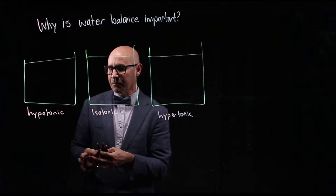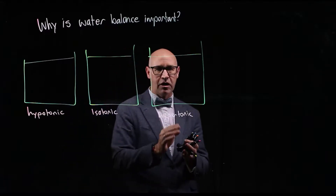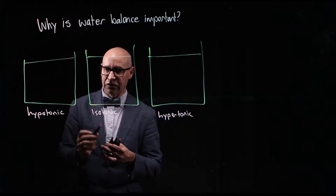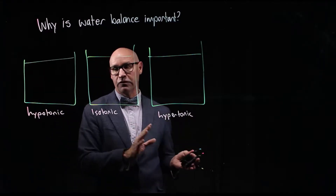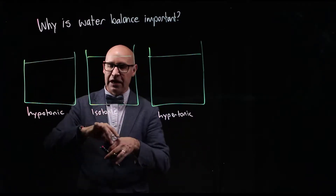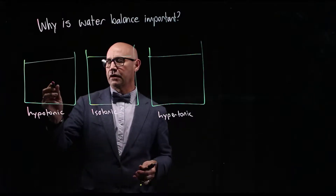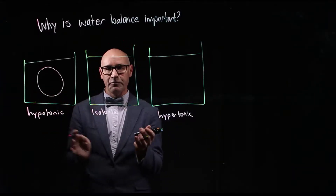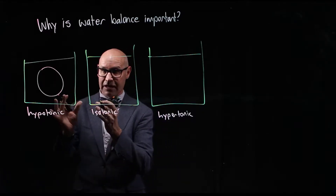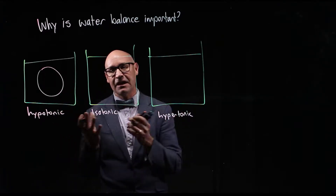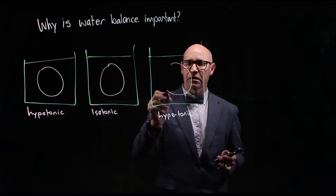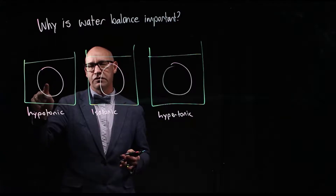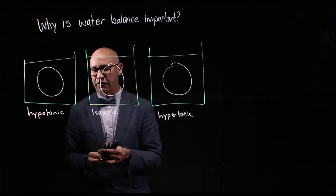Now when we're talking about hypo, iso and hyper, we're talking about the amount of solute — the thing dissolved in the water — in the solution around the tissues. Here's the tissue; it could be a slice of potato, it could be the brain, it could be any tissue of the body. So we're talking about comparing the amount of water inside and the amount of water outside.